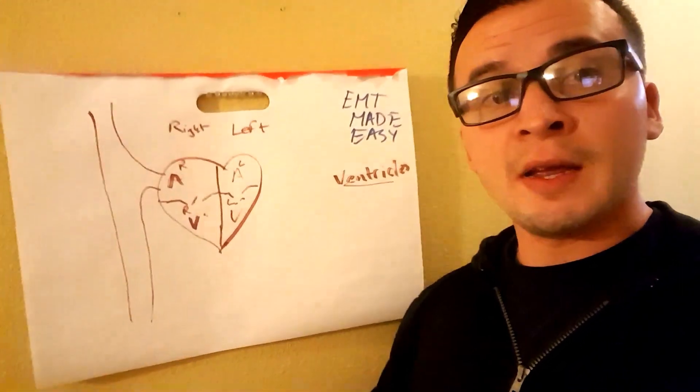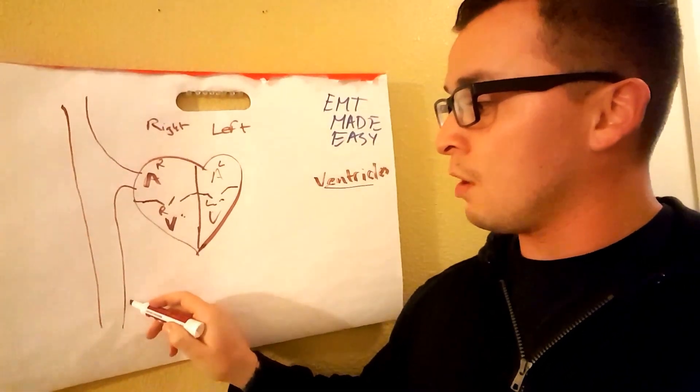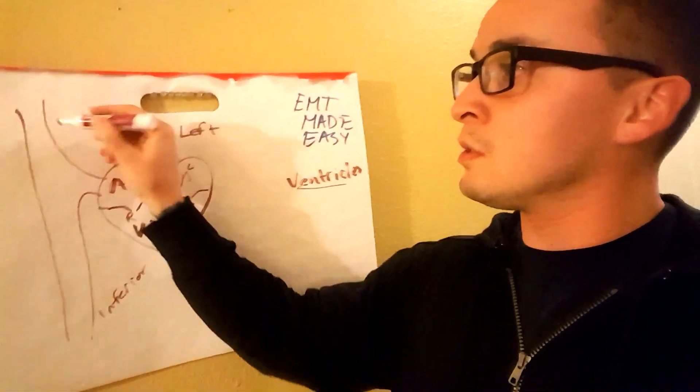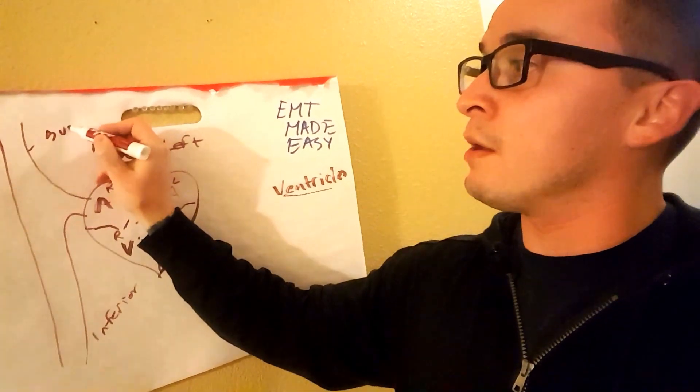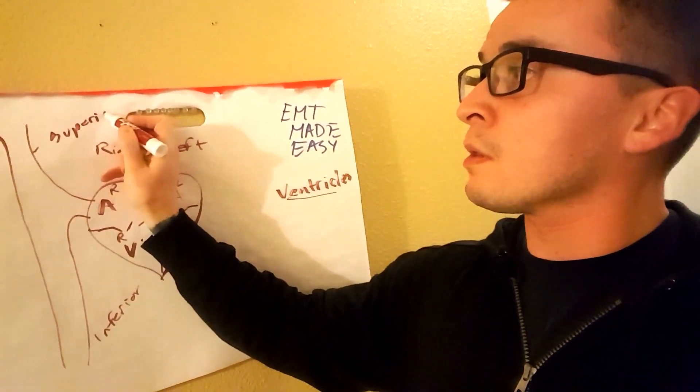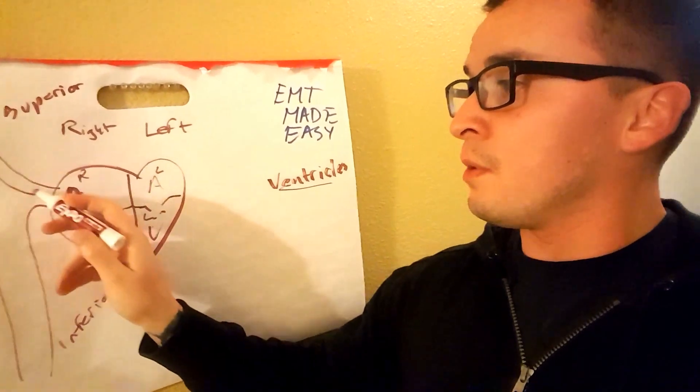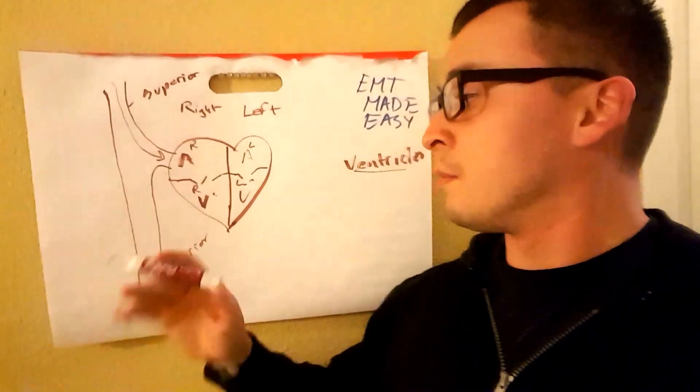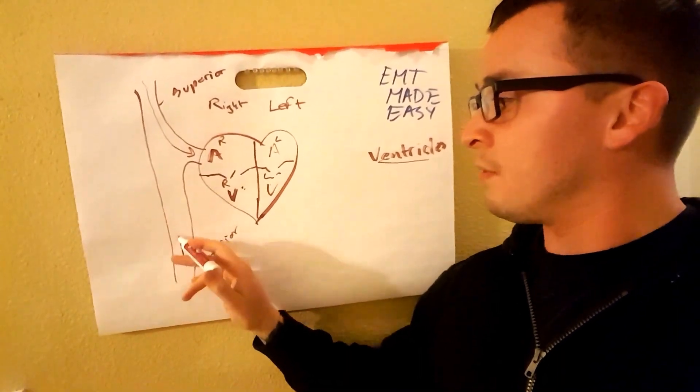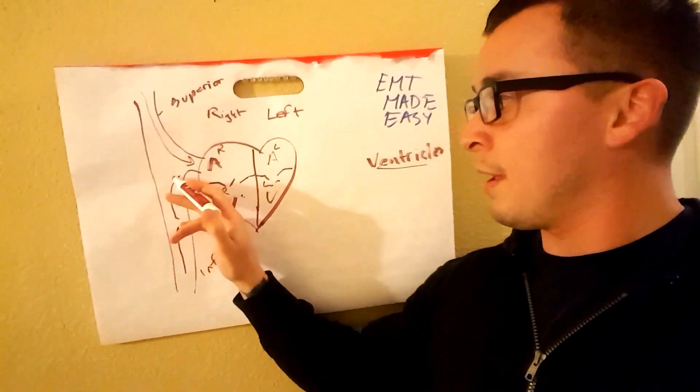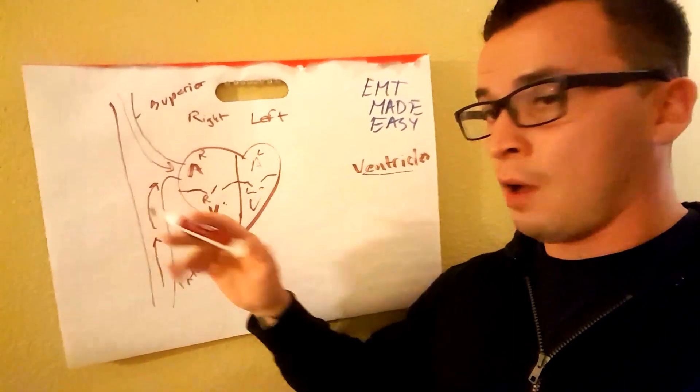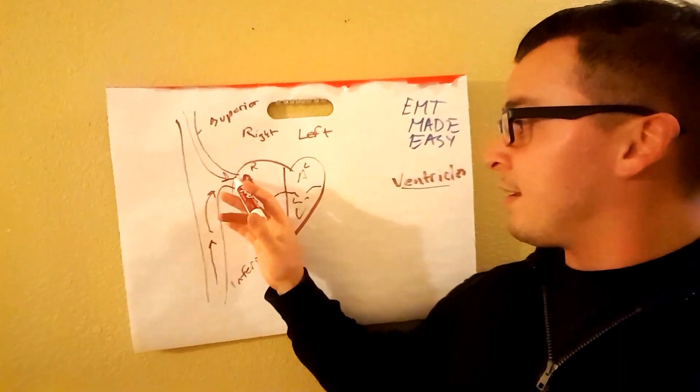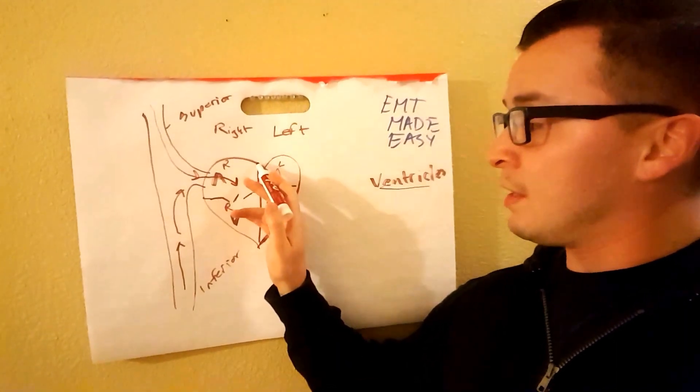Through two big veins, this is called your inferior vena cava, this is called your superior vena cava. Blood coming from the top part of your body like your head, shoulders, arms, and then from your inferior vena cava, blood coming from your legs and everything else in the bottom abdominal region.